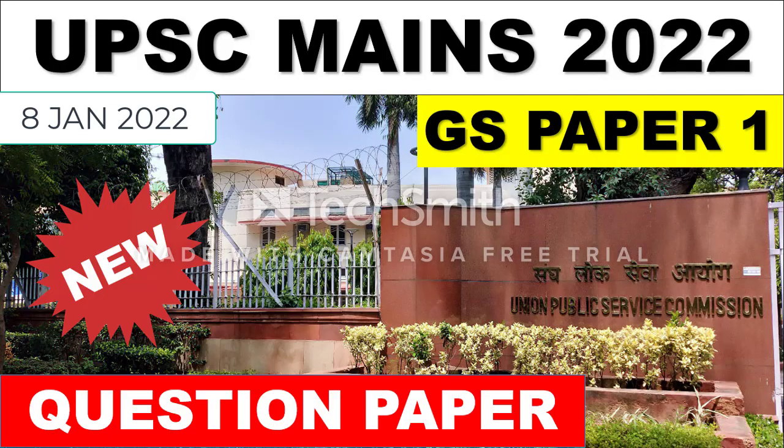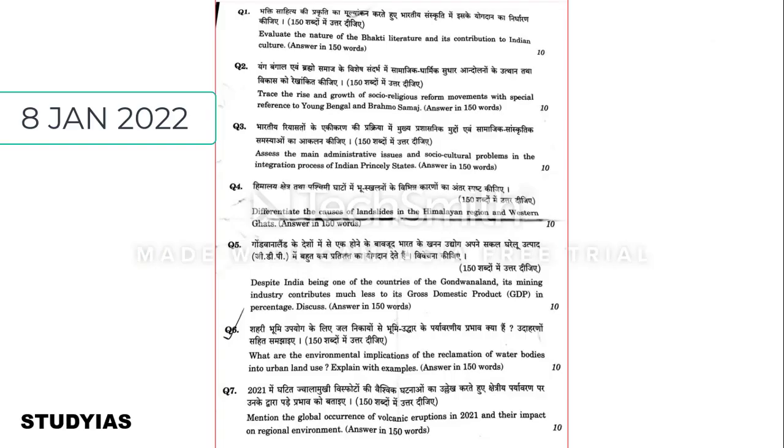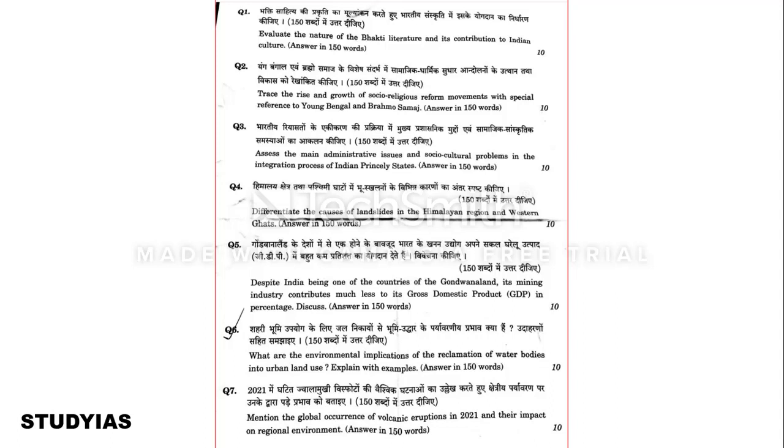The question paper is now in front of us. You can see some 10-marker questions and some 15-marker questions. The first question is: Evaluate the nature of Bhakti literature and its contribution to Indian culture. The Bhakti movement and Bhakti literature are important for both Prelims and Mains.